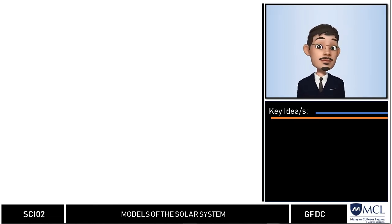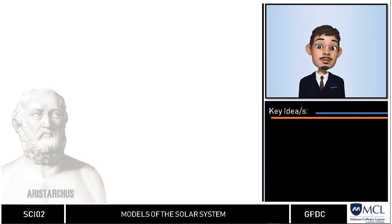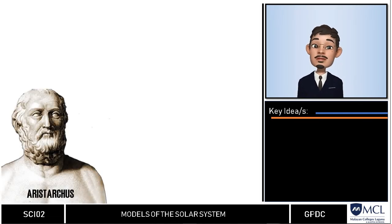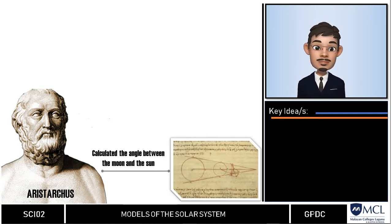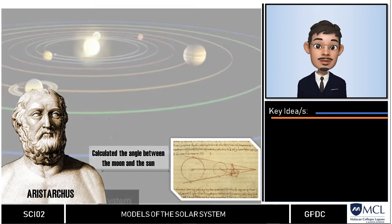However in third century, Aristarchus was the first person to calculate the distance of the earth to the sun. He conducted this by measuring the angle between the moon and sun and applied some principles of trigonometry.